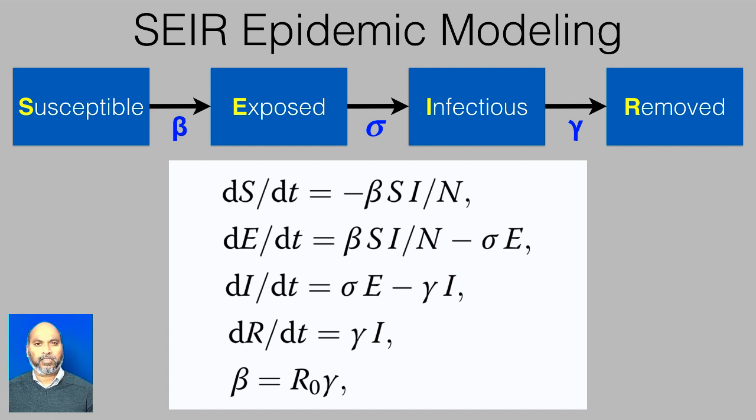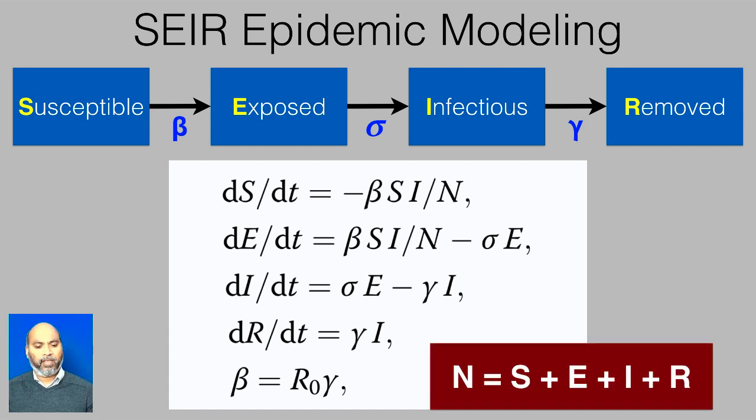So coming back to this SEIR model, these four buckets of numbers are connected in such a way that these governing equations explain their behavior. The red box you see in the bottom is basically the sum of all the numbers. If you sum people in all the boxes, that should be equal to the population of the city or the country or the world, wherever you are running the simulation. So that's the N. But there are other equations that are there. We need to understand what do they mean.